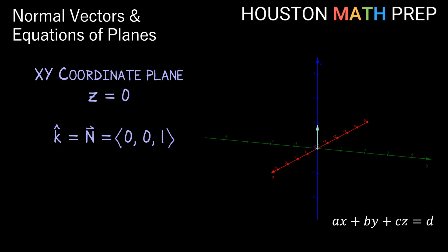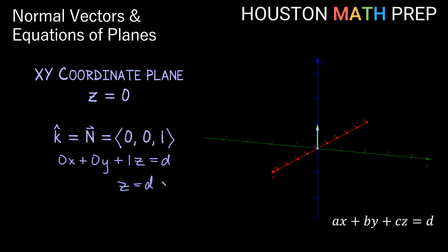Let's go back and look at equations for the coordinate planes. The xy coordinate plane has z = 0 as its equation. Think about it: this xy plane has a normal vector sticking straight up in the z direction. The vector k-hat, which is (0, 0, 1), is normal to the xy plane. Using that as our normal vector gives coefficients 0, 0, 1, so the equation is 0x + 0y + 1z = d, which simplifies to z = d. Since the plane goes through the origin, plugging in (0, 0, 0) gives d = 0, confirming z = 0.